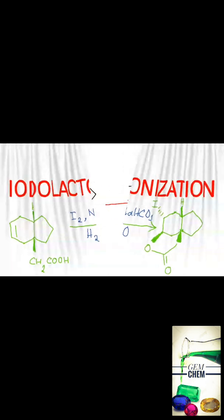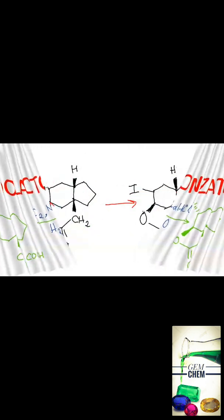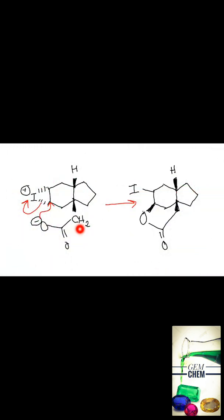Now the mechanism is quite straightforward. Iodine gets incorporated into the double bond, and this attack takes place from the upside. Iodine is then released from this particular carbon to give us the product. Hope this was helpful — thank you for watching.